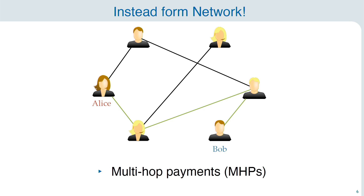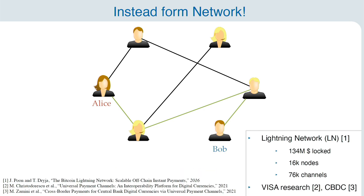This sort of payment is also known as a multi-hop payment. There exists a very prominent implementation of this, the Lightning Network, that has quite some money in it and also quite some nodes and channels. It has also gained some attention from industry, for instance Visa Research or central bank digital currencies.